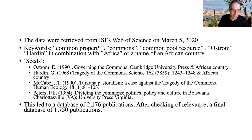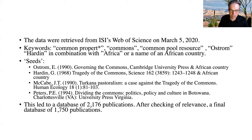We collected the data we present on March 5th of this year. We had a number of keywords such as common property, commons, common pool resources, and also names — Ostrom and Hardin. We only selected publications if the title, abstract, or keywords also refer to Africa or an African country. We included articles that cited Ostrom's Governing the Commons